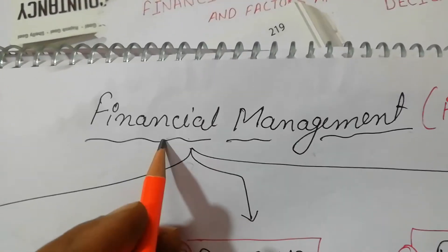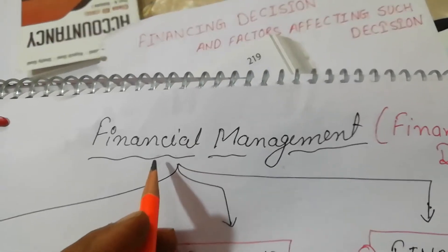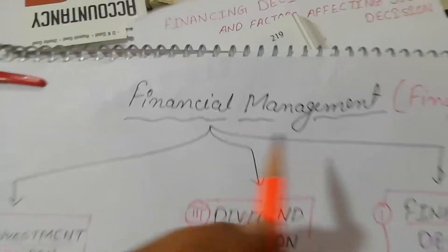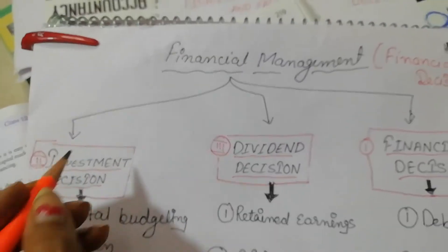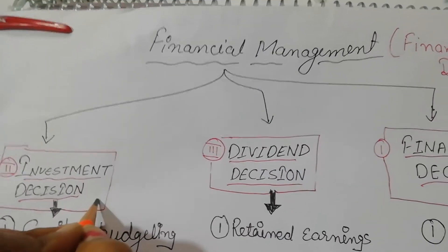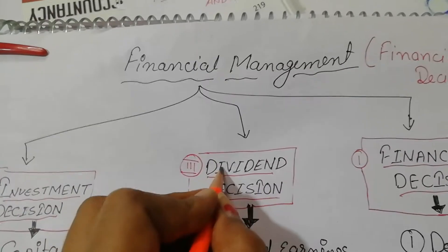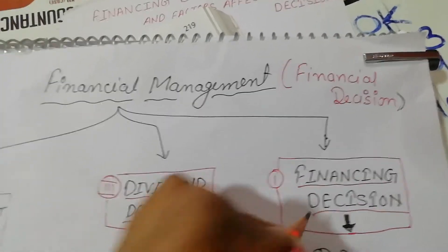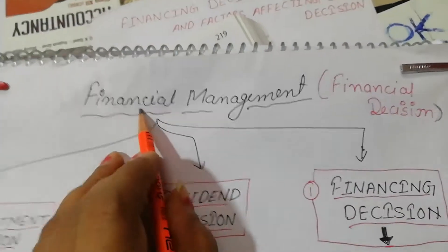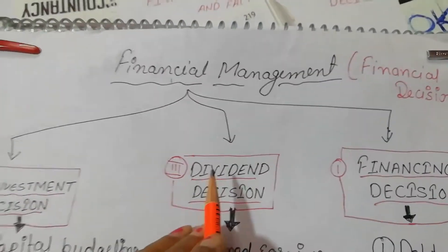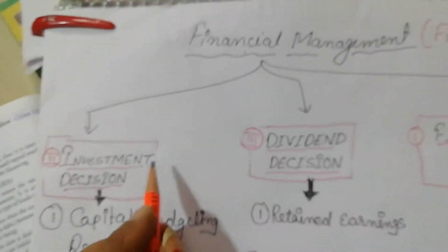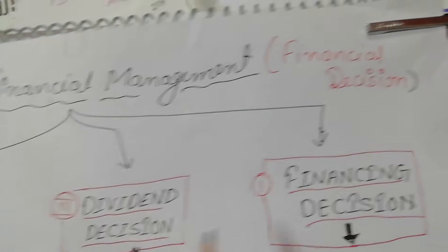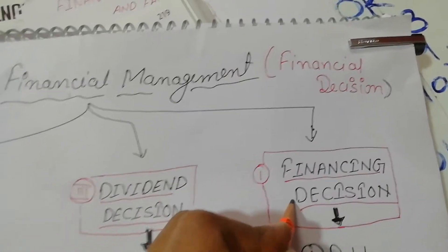That means proper utilization of finance according to work. Now, financial management is divided into three parts: investment decision, dividend decision, and financing decision. So financial management is divided into these three parts: investment decision, dividend decision, and financing decision.